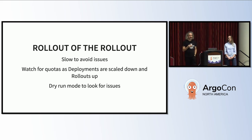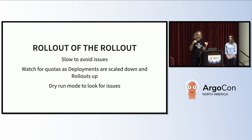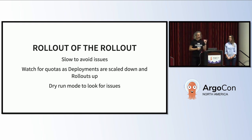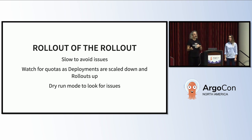How did we roll out Argo Rollouts? We did it very slowly to avoid issues. One important thing we noticed: watch for quotas. Because as deployments are scaled down and rollouts are scaled up, you can start hitting the quotas on namespaces, and then suddenly the rollout is not progressing — it gets stopped and degraded. Another good feature is dry run mode. You can enable dry run mode, do the Argo Rollouts, and then look later at when Argo Rollout would have done a rollback. That allows you, without breaking anything, to more carefully assess what could happen if you enable it.